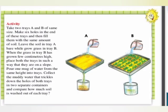Here is a small activity: take two trays A and B of the same size, and mix six holes in the end of each tray. Fill them with the same amount of soil. Leave the soil in tray A bare, while grow grass in tray B. When the grass in tray B has grown a few centimeters high, place both trays on a slope. Pour one mug of water from the same height into each tray, collect the muddy water that trickles down through the holes of both trays, and compare how much soil is washed away from each tray.